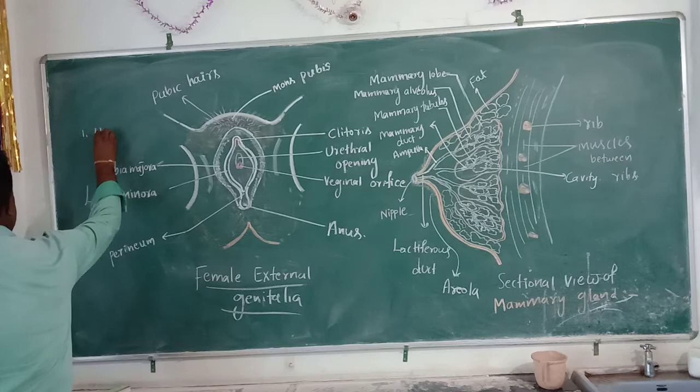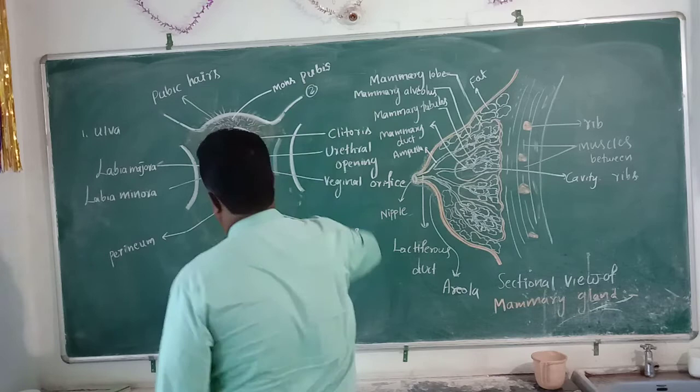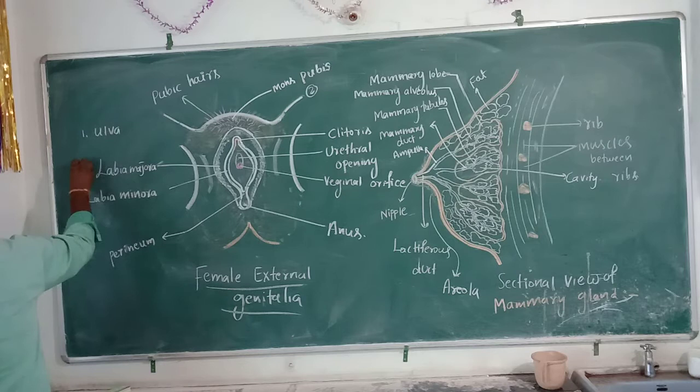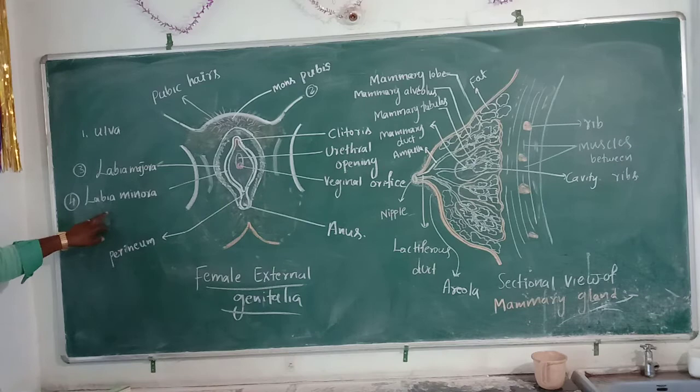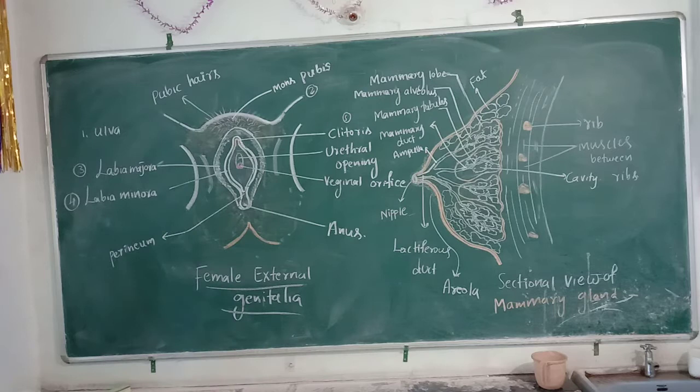The second one is mons pubis. The third one is labia majora. The fourth one is labia minora. And one more important part is the clitoris.